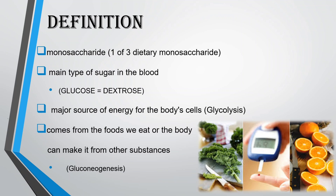Glucose is the major source of energy for the body's cells. It undergoes glycolysis and comes from the foods we eat, or the body can make it from other substances through gluconeogenesis.